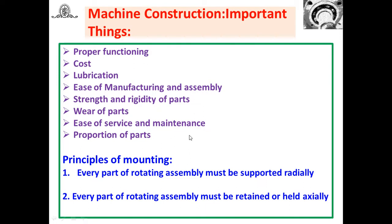Now let us see the important things to be considered while constructing machines — while mounting the parts. The first is proper functioning of the parts: each and every machine element should work properly. Second is cost of the component or parts. Third is the lubrication system used for machine elements. Fourth is ease of manufacturing and assembly — how parts should be assembled easily and dismantled for maintenance. Fifth is the strength and rigidity of the parts.